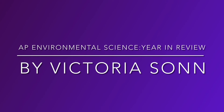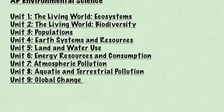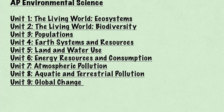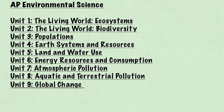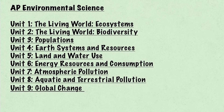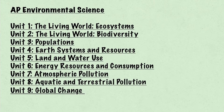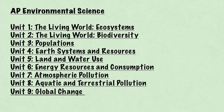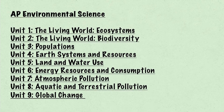AP Environmental Science Year in Review by Victoria Sun. Here we have all the units going from Unit 1, the Living World and Ecosystems, all the way down to Unit 9, ending at Global Change. I will go through each and every unit and what is composed of each unit.